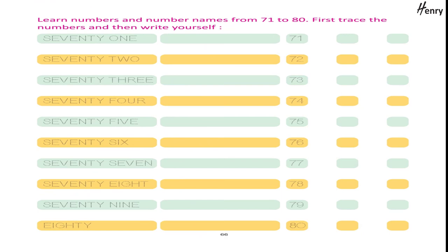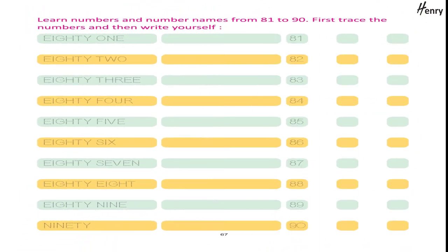Learn numbers and number names from 71 to 80. First trace the numbers and then write yourself. Learn numbers and number names from 81 to 90. First trace the numbers and then write yourself: 81, 82, 83, 84, 85.